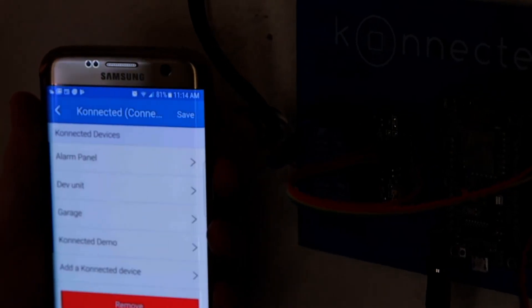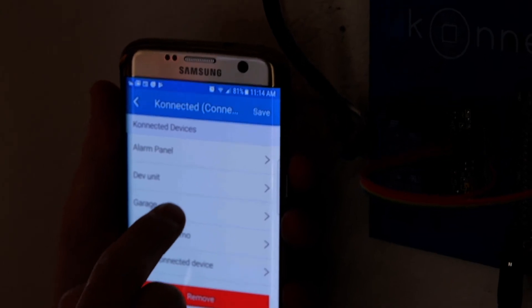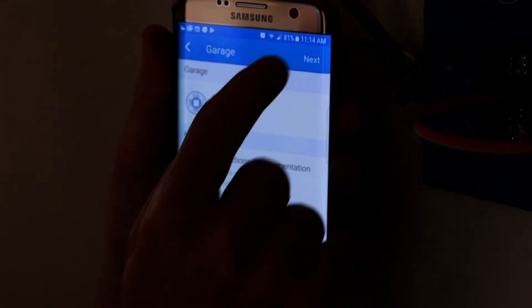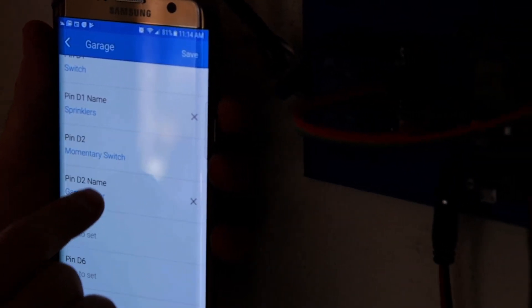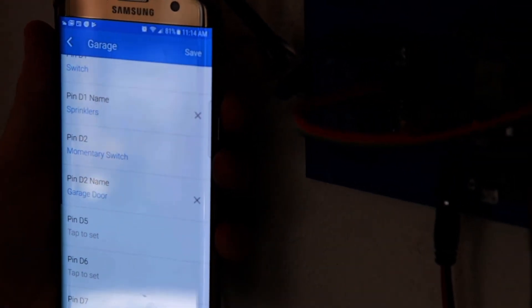Let's go back to the connected smart app and go to my garage panel. And I've got the momentary switch named garage door set up on pin D2. And now let's see how it works.